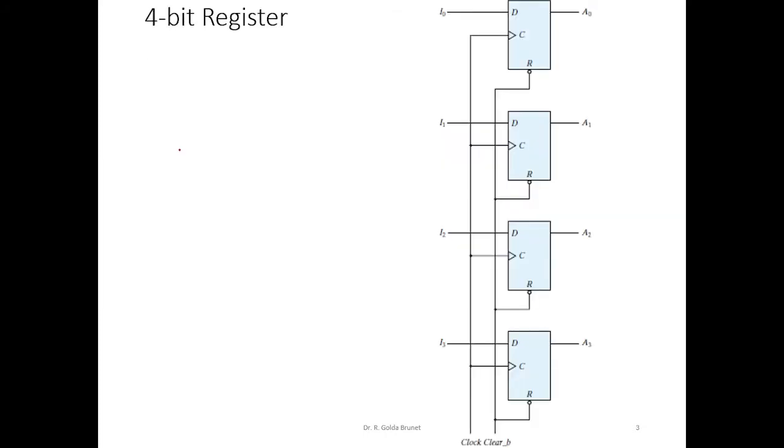This is a simple design of a 4-bit register. We have 4 flip-flops, D flip-flops, A0, A1, A2, and A3. All the flip-flops are connected to data lines I0, I1, I2, and I3, and they are driven by the common clock. And there is an asynchronous reset button which will clear the content of the flip-flop.